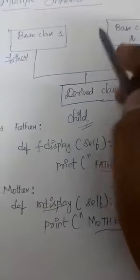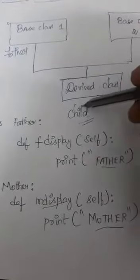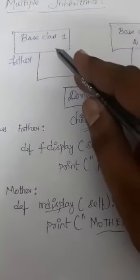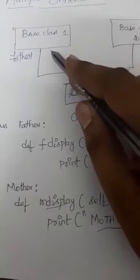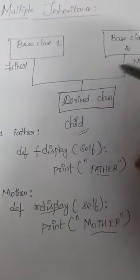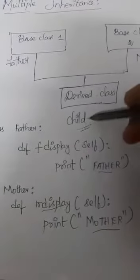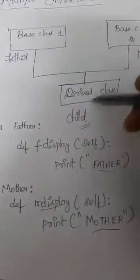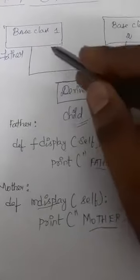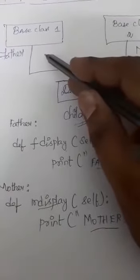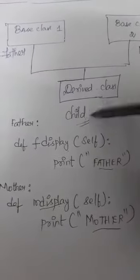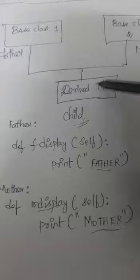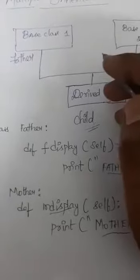Why are you specifying father comma mother? Because this child class is acquiring the properties — it is dependent on both father and mother. Likewise, a child class acquires the properties of both father and mother, so I am passing father comma mother in the parenthesis.